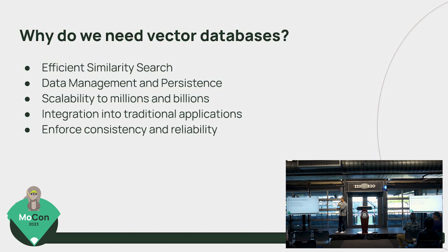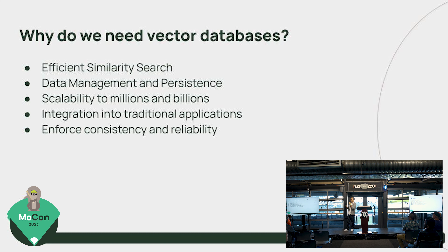Why do we need vector databases to begin with? Efficient similarity search — Manju did an awesome talk just now where you're trying to retrieve similar items. Data management and persistence — how are you going to persist it? You can't hold everything in memory. Scalability to millions and billions — it's fine when you have a bunch of vectors in the thousands and your CPUs or GPUs can handle it, but how do you go beyond that? And integration into traditional applications, enforcing consistency and reliability.